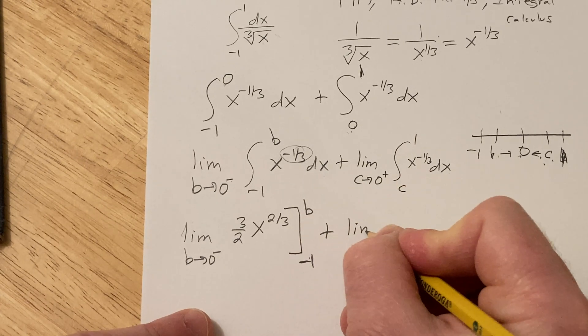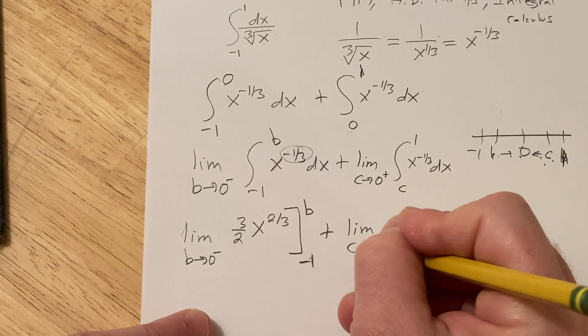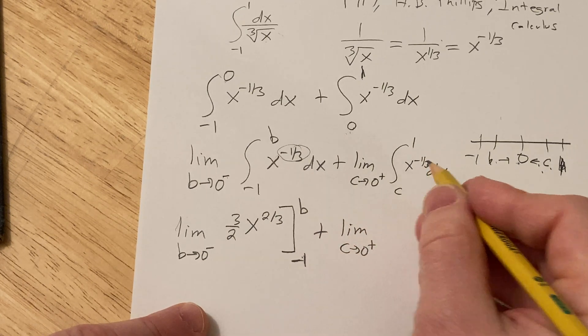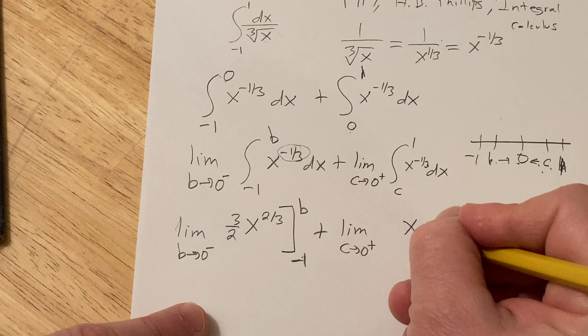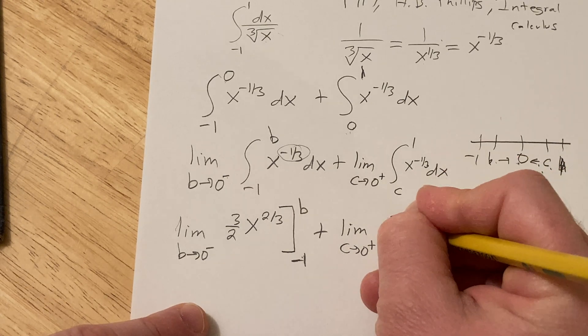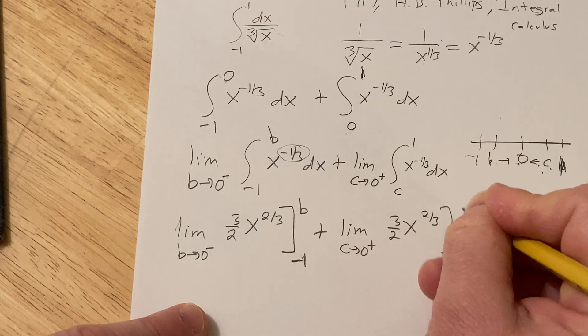Plus, here we have the limit as c approaches zero from the right. Same thing here: it'll be x to the two-thirds times three-halves. And we have c and 1.